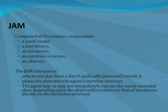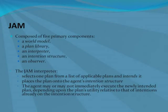The world model is a database that represents the beliefs of an agent. The plan library is a collection of plans that the agent can use to achieve its goals. The interpreter is the agent's brain that reasons about what the agent should do and when. The intention structure is an internal model of the goals and activities that the agent currently has, and keeps track of progress toward accomplishing those goals.